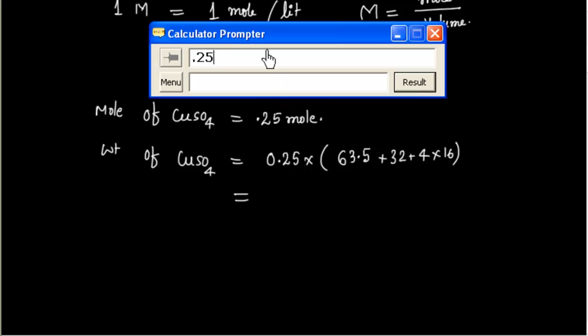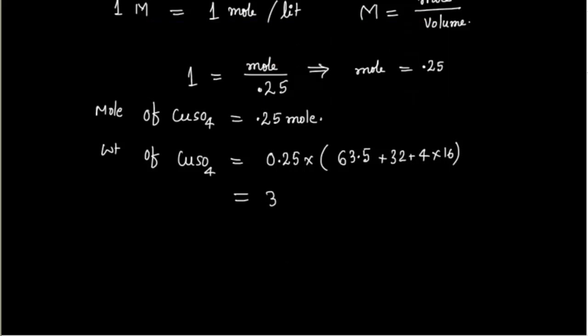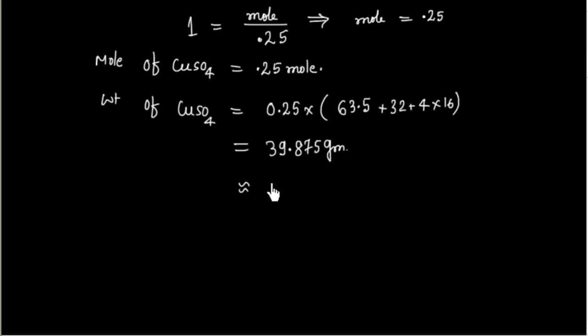So let us check this value. So you have 0.25 multiplied by 63.5 plus 32 plus 4 into 16. So this is 39.875 gram. So if I round off this one, this figure comes out to be exactly around 39.9 gram.